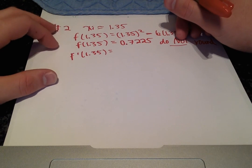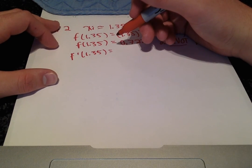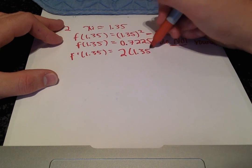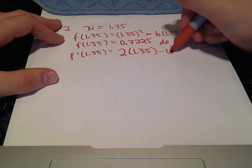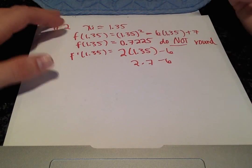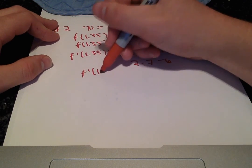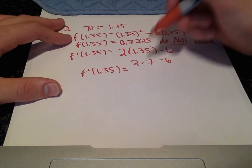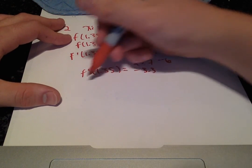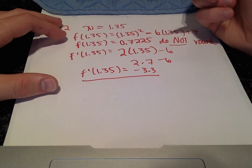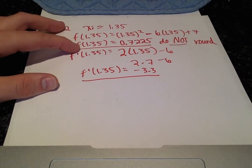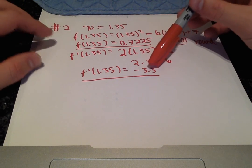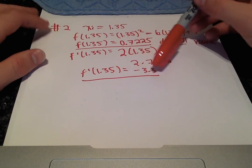So f prime of 1.35 is going to be 2 times 1.35 minus 6 or 2.7 minus 6, which then comes out to negative 3.3. So we have f of 1.35 equals 0.7225 and f prime of 1.35 equals negative 3.3.